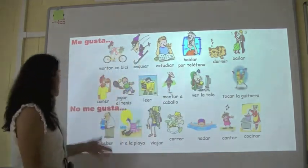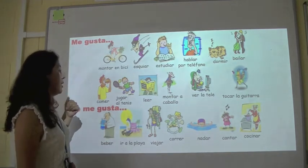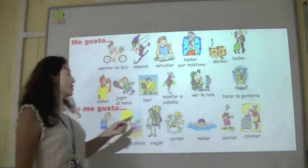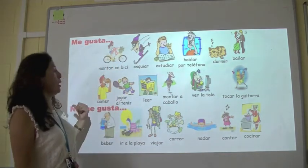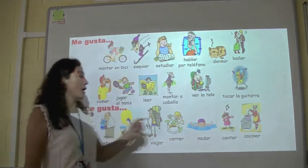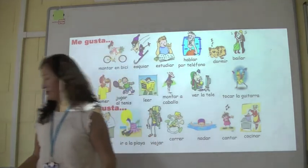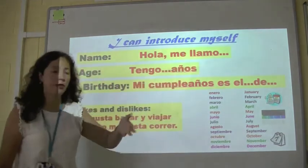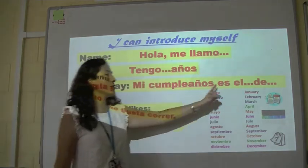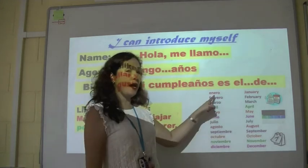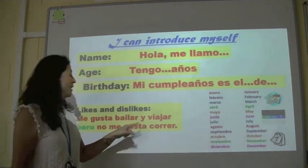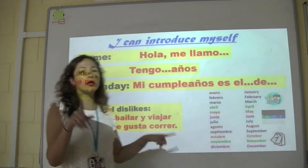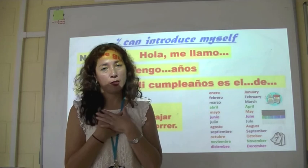You can talk about activities you like and don't like. For example, no me gusta correr — I don't like running. No me gusta cantar — I don't like singing. Then you start adding more details about yourself. Hola, me llamo señora Watson, tengo 20 años, mi cumpleaños es el 21 de enero, me gusta bailar y viajar — which is traveling — pero no me gusta correr.